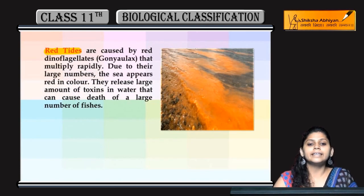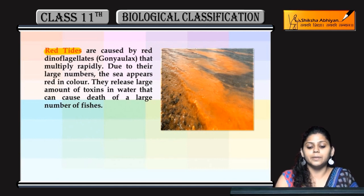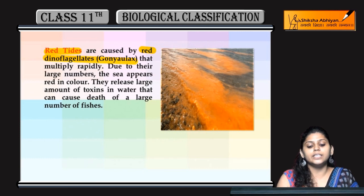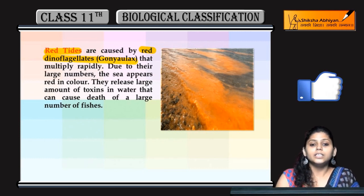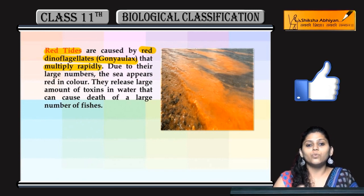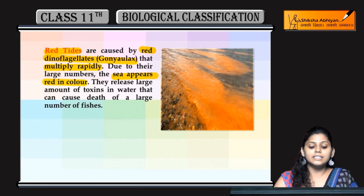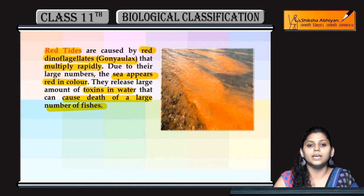Red tides: the water body turns red in color due to red dinoflagellates. An example of this is Gonyaulax. It multiplies very quickly in the water body, imparting a red color, which is why the sea appears red. These organisms also release toxins into the water, causing the death of a large number of fishes and other aquatic animals.